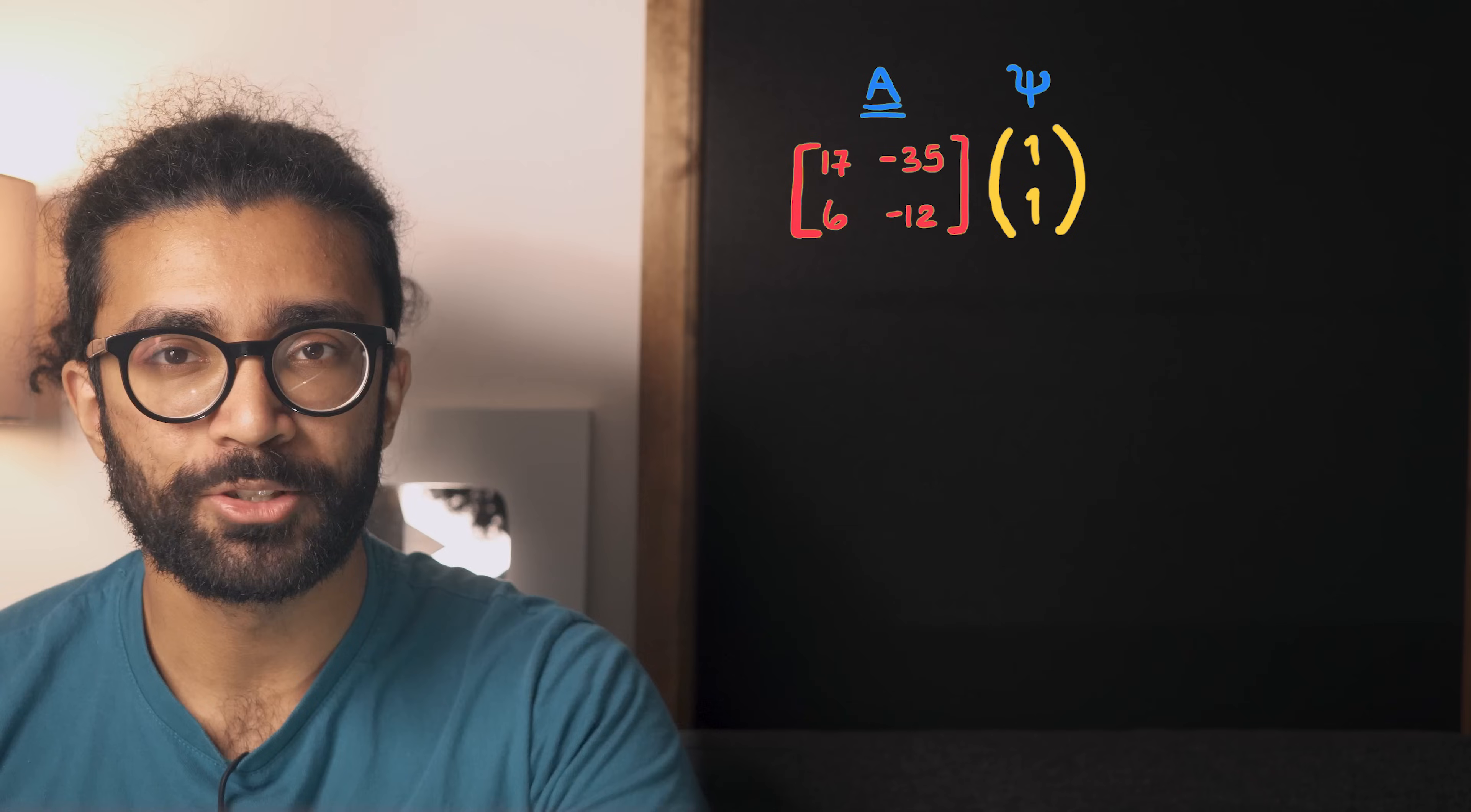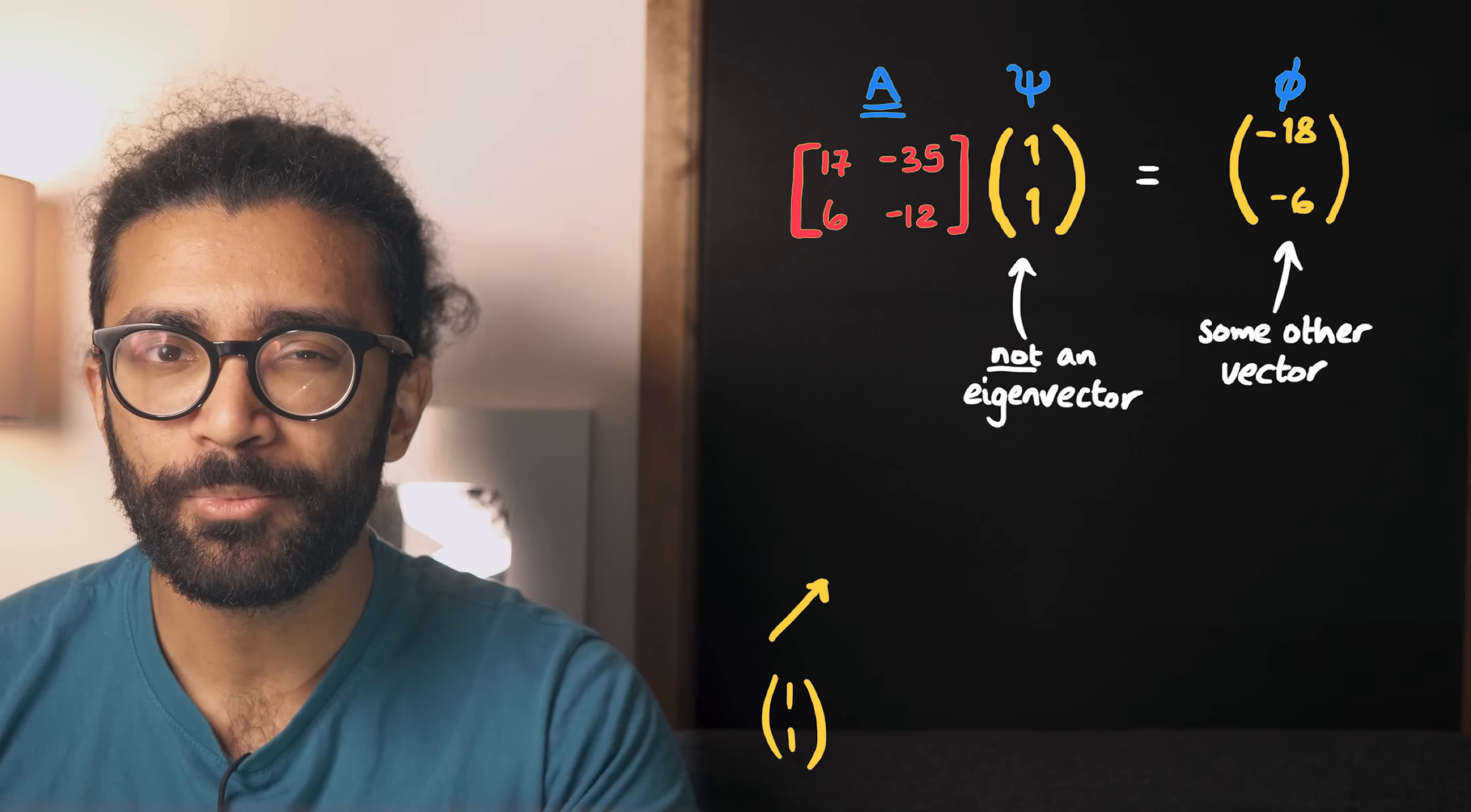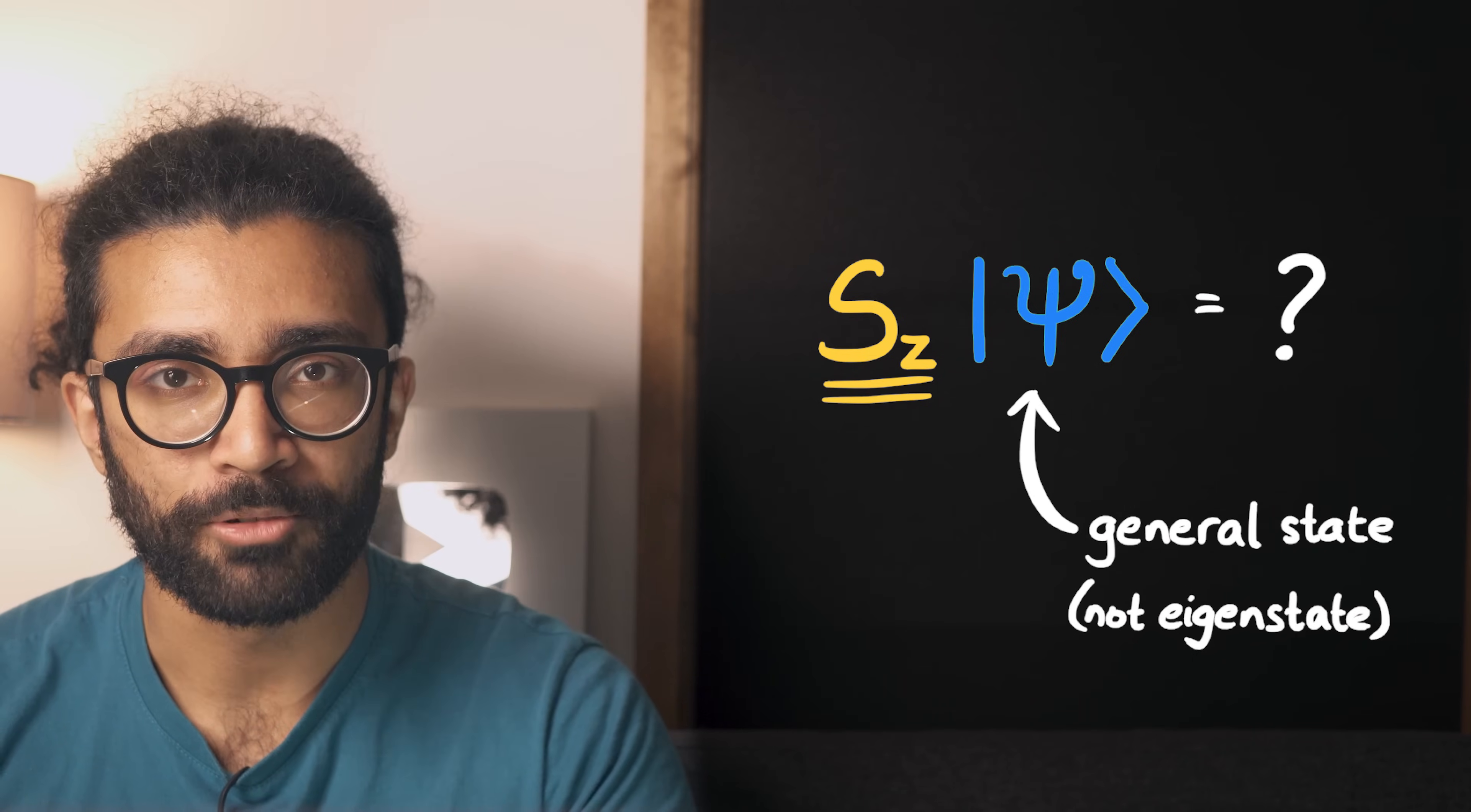We saw that when our matrix was applied to a vector that was not an eigenvector, that vector ended up getting transformed. And similarly, in quantum mechanics, we can think about a state that is not an eigenstate or eigenvector of our measurement operator.